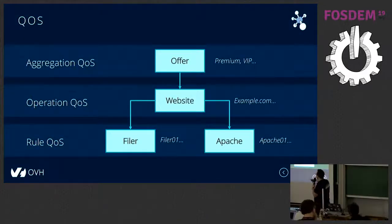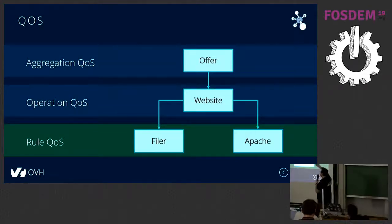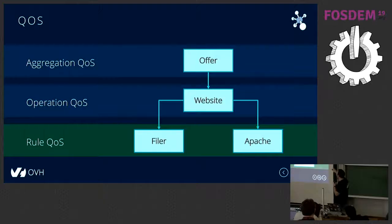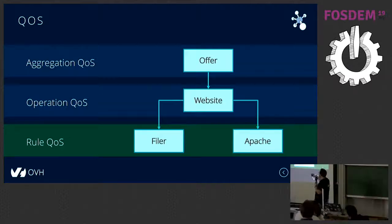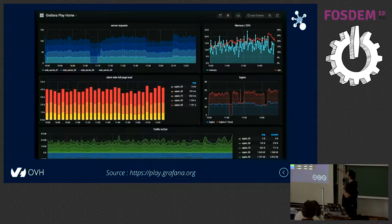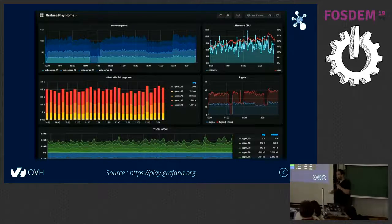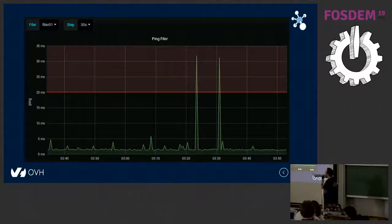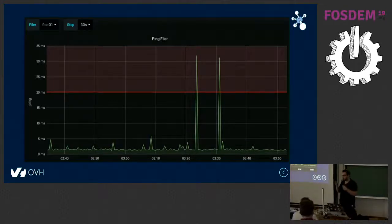Let's start with the rule QoS. We want to compute the QoS of a website which depends on two dependencies: a storage server and a web server. We'll also see how to compute the QoS of a group of websites using a label called 'offer'. The idea of the rule QoS is simple: we analyze data points, and if they are above a given threshold, we say the QoS is degraded during that moment and decrease the QoS accordingly.